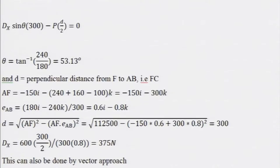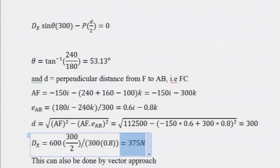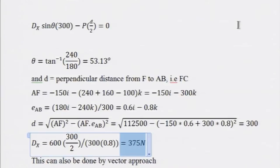The solution is displayed in the video. Ultimately the answer will be 375 Newton. Here is the equilibrium equation — moment about AB: dx·sinθ × 300 equals negative P·d/2. All the solutions will also be posted on the module so we can look at them afterwards.